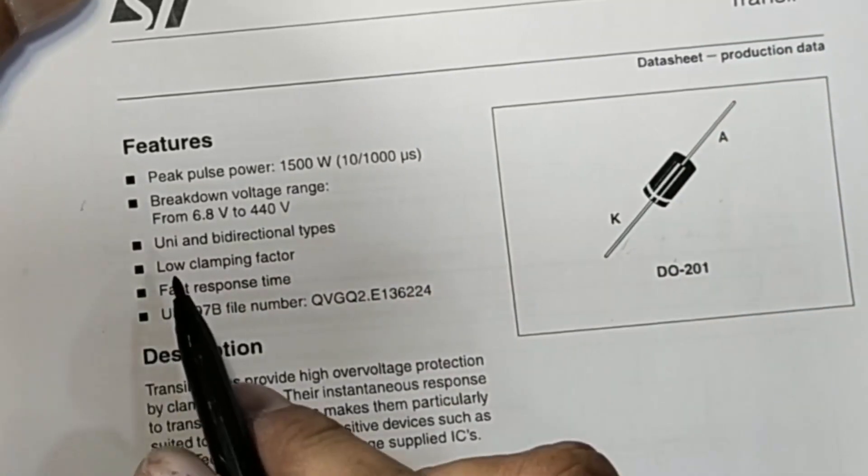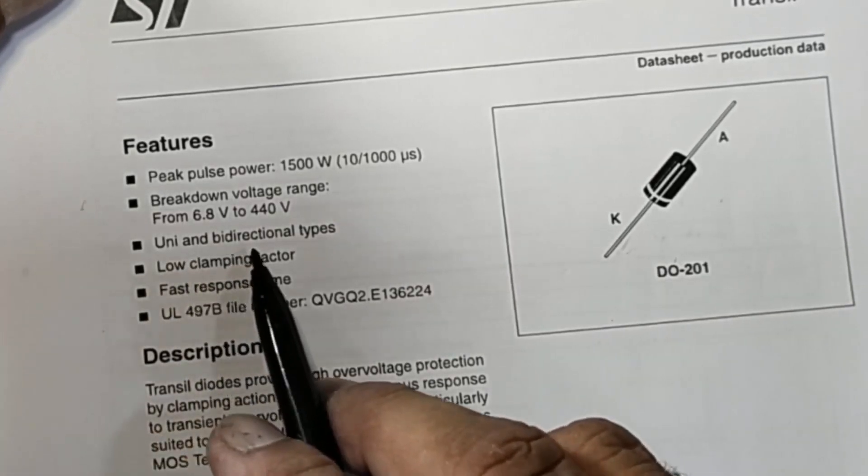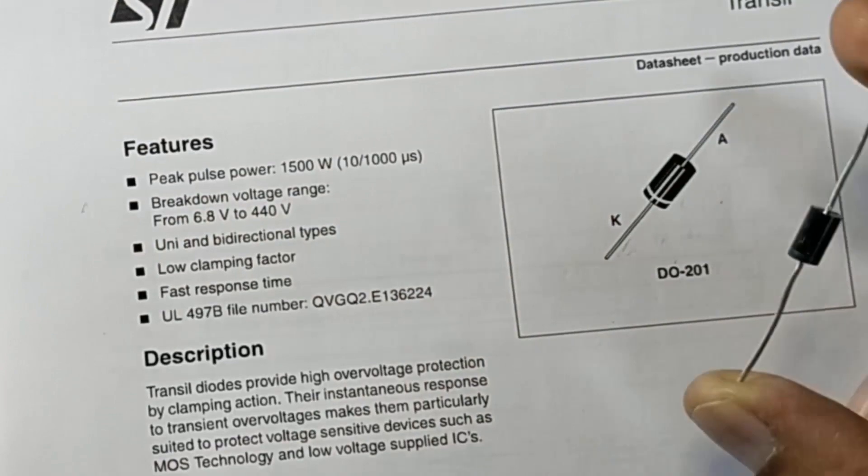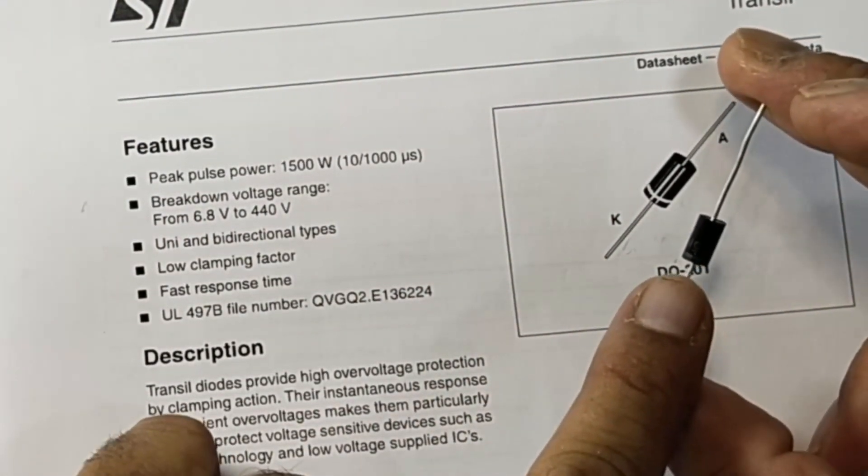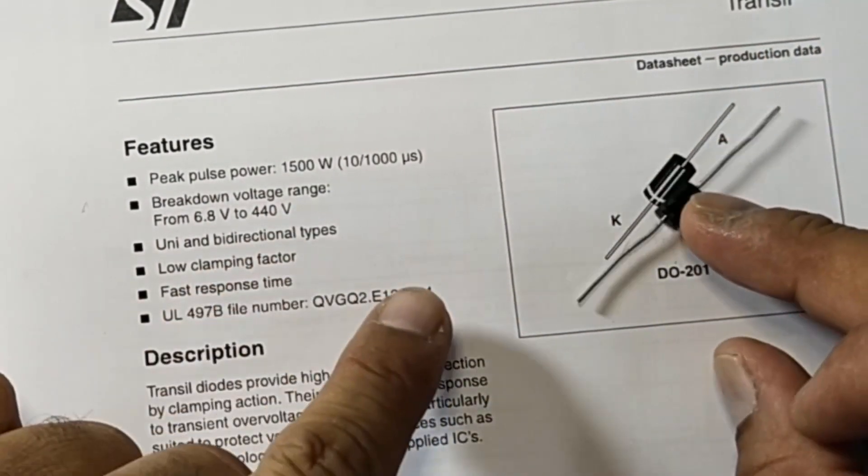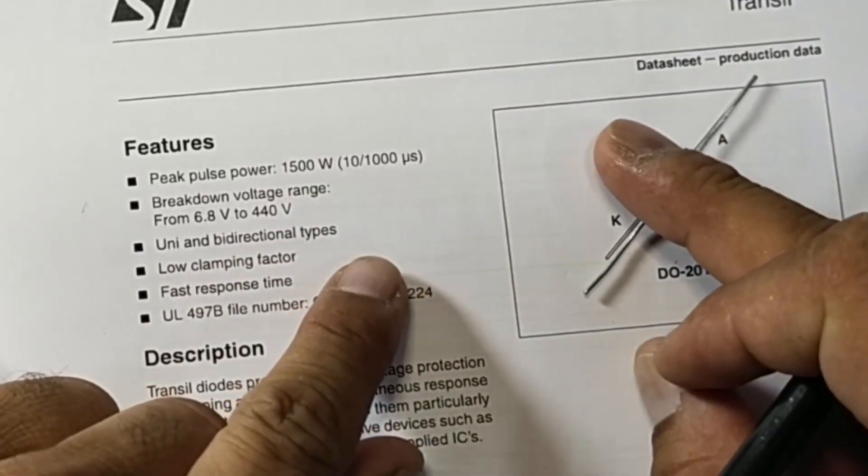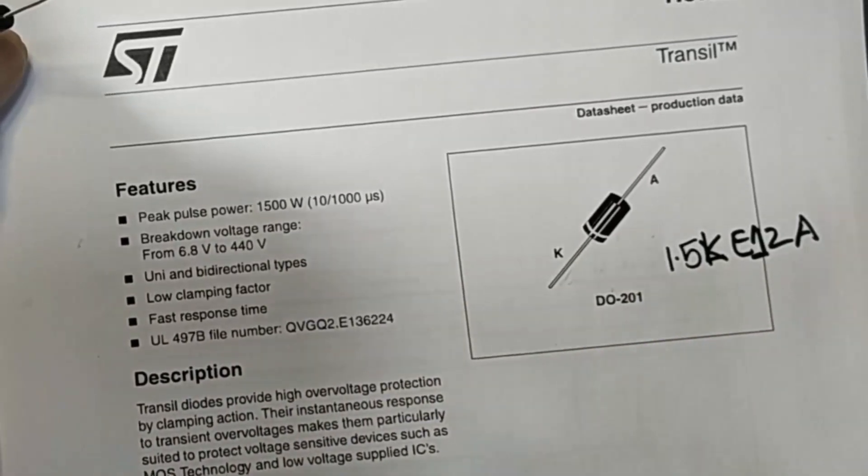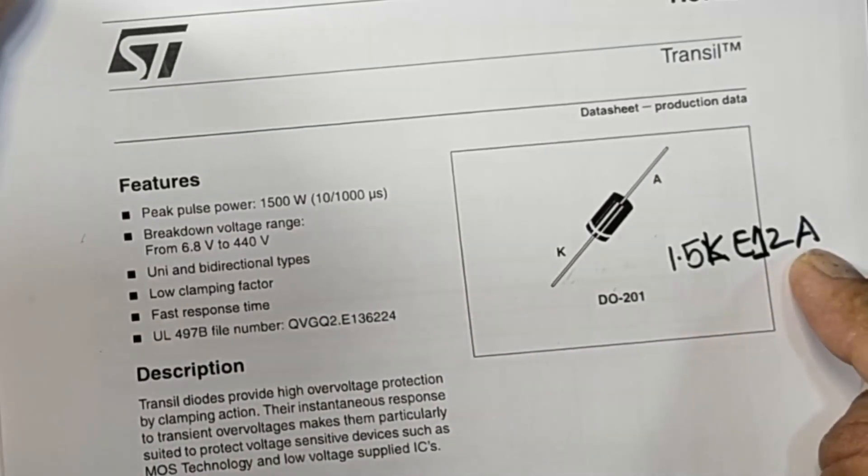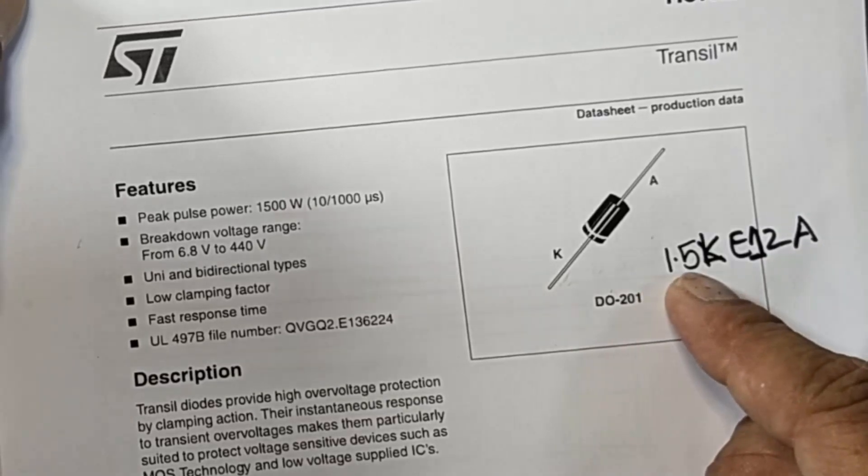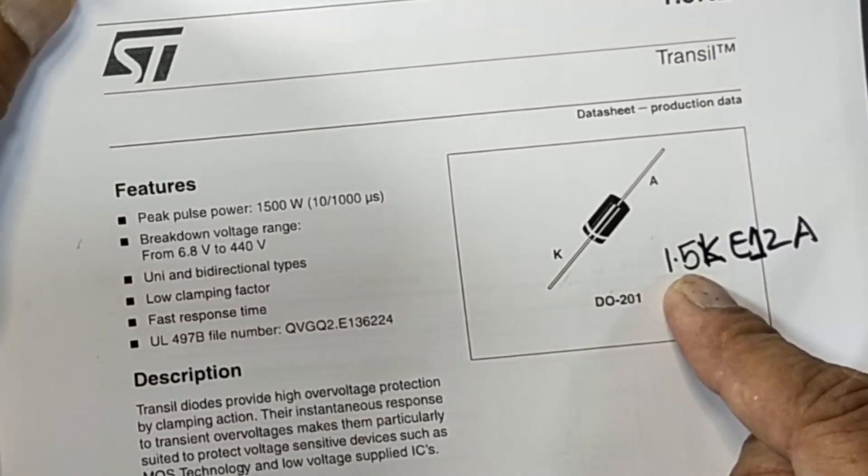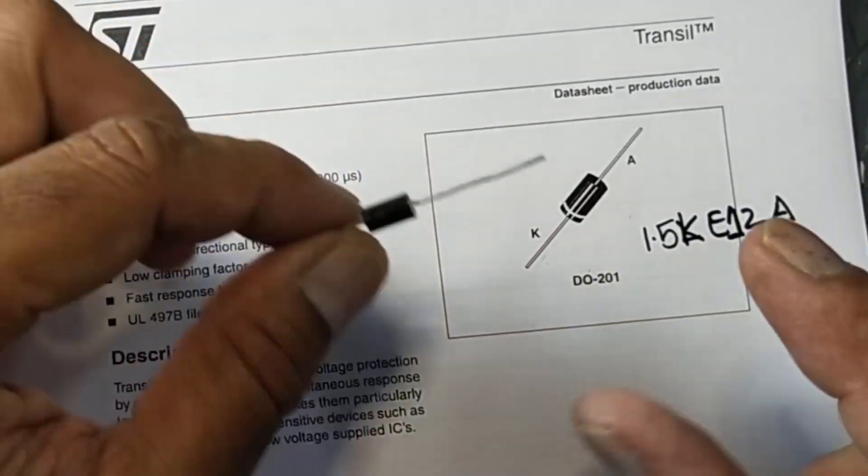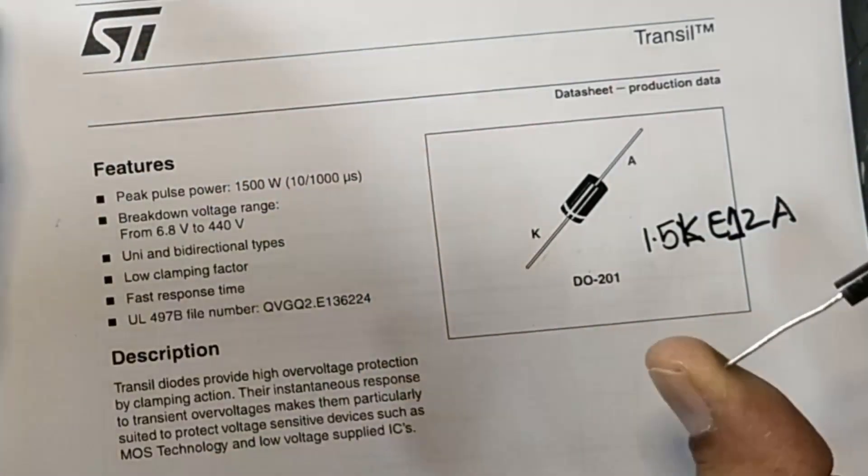And it has a breakdown voltage from 6.8 volt to 440 volt. It is in different voltage categories. Then it has unidirectional and bidirectional. In this video we are discussing unidirectional. So it is used in DC line. If it is CA then it will use bi-directional. 12A - 12, that means it is voltage. 1.5 - this is peak pulse power dissipation. So it is 12 volt unidirectional TVS diode.